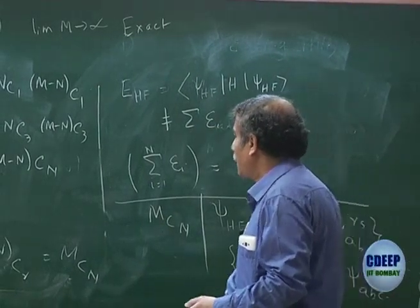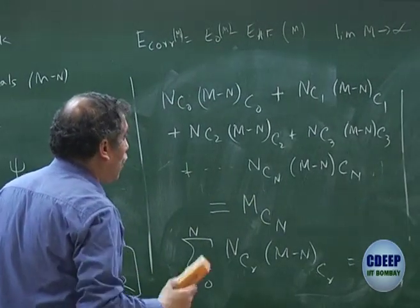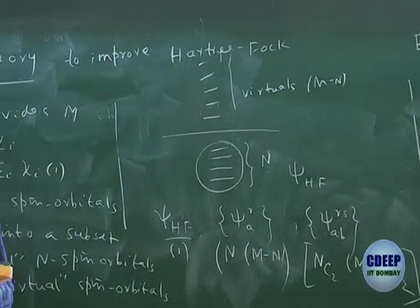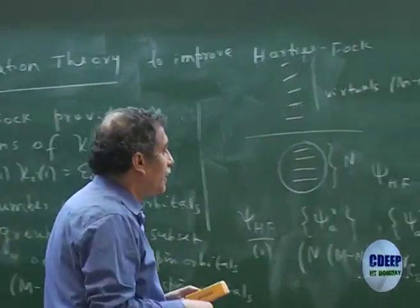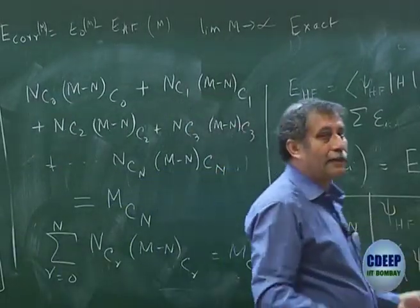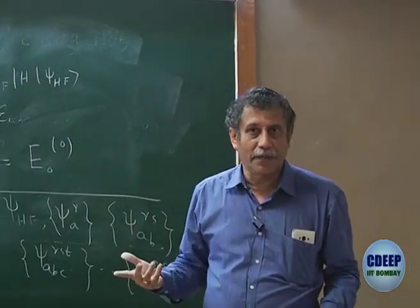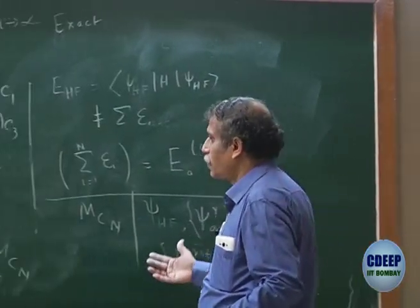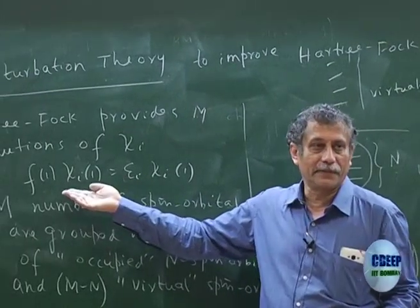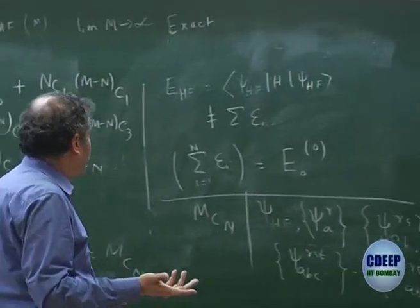So this number of determinants can be categorized in this manner. Now our task is to come back to the problem: do I know all solutions of H₀? Each of the determinants written here must be an eigenfunction of H₀, and quite clearly the answer is yes, because they are constructed out of the same set of spin orbitals which are eigenfunctions of the Fock operator.